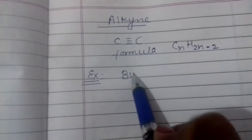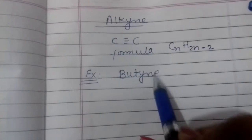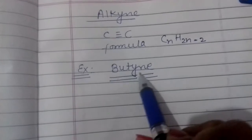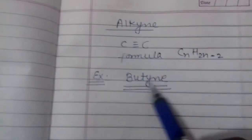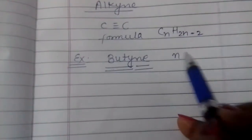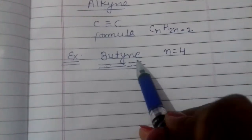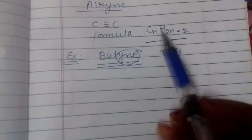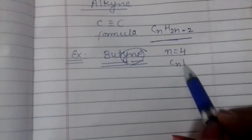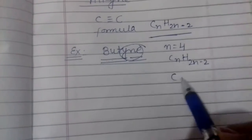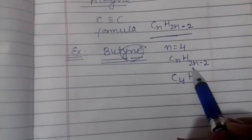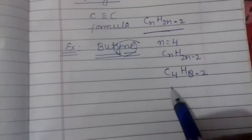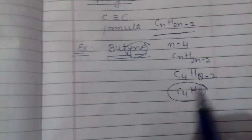Example से समझते हैं - जैसे हमें बनाना हो butyne। Butyne बनाने के लिए इसको दो हिस्सों में divide करते हैं: prefix और suffix। Prefix इसका 'but' है, तो carbon number N हो गया 4। 'Yne' है, तो formula लगाना है CnH2n-2। यहाँ apply करें: carbon 4, hydrogen double करने पर 8, 8-2 = 6, तो formula हो गया C4H6।